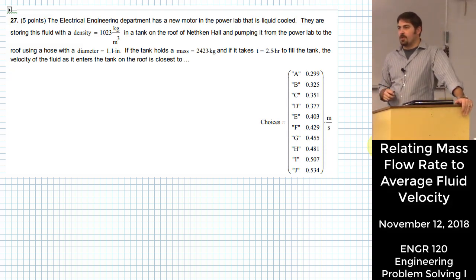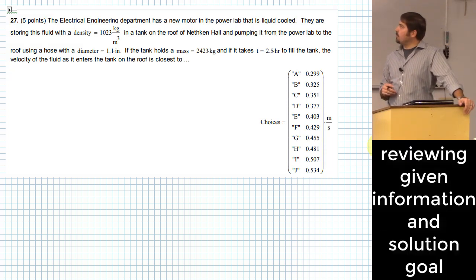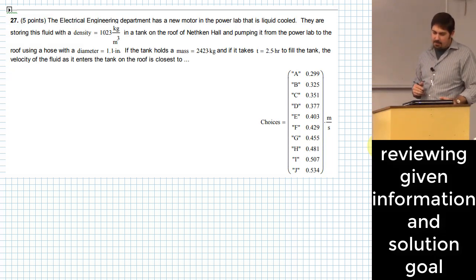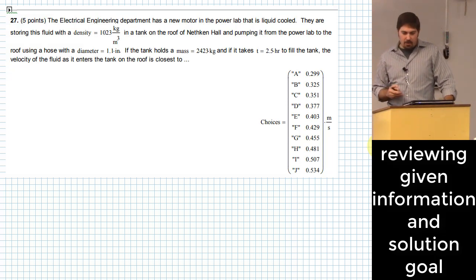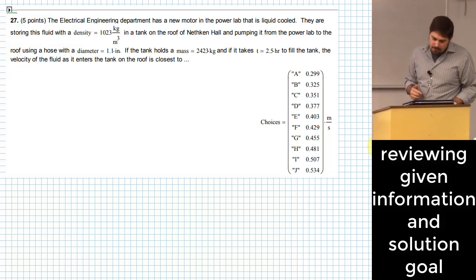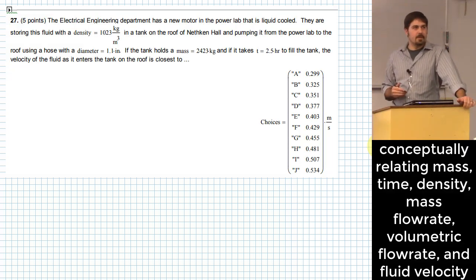So those crazy double E's over in Nethkin have a motor that's liquid cooled. They're going to store the fluid in a tank on the roof and need to pump it from the power lab up to the roof. We're going to do that with a hose that has a diameter of 1.1 inches. The tank holds a mass of 2,423 kilograms and it takes two and a half hours to fill the tank. What we want to know is what is the velocity of the fluid as it enters the tank on the roof.